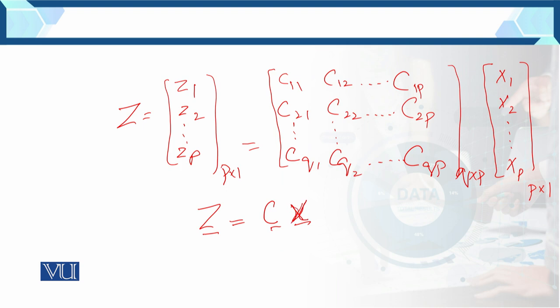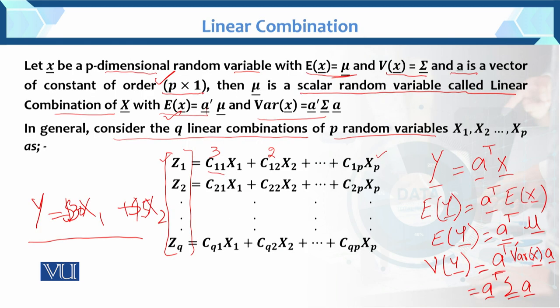Note that vector form uses small letters, and matrix form uses capital letters. So now you have the idea of what linear combination is. In general, consider q linear combinations of p random variables x1, x2, ..., xp. We have transformed our variables x1 and x2 — similarly this is how linear combination is introduced in multivariate analysis.